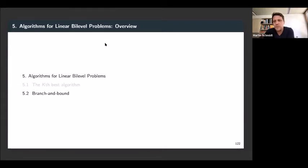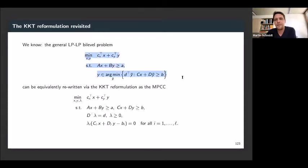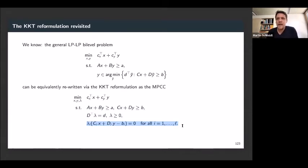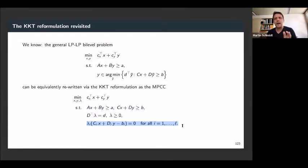Now let's consider branch and bound again. We consider this very general LPLP problem, where we are allowed to have coupling constraints and impose no other assumptions. We have seen this morning that you can write down the KKT formulation. What you get in addition to the original problem are the dual polytope and the KKT complementarity conditions. The bad guy of this reformulation is exactly the KKT complementarity conditions — the only non-linear constraint, and the one requiring big-M values in binary-variable-based linearization.